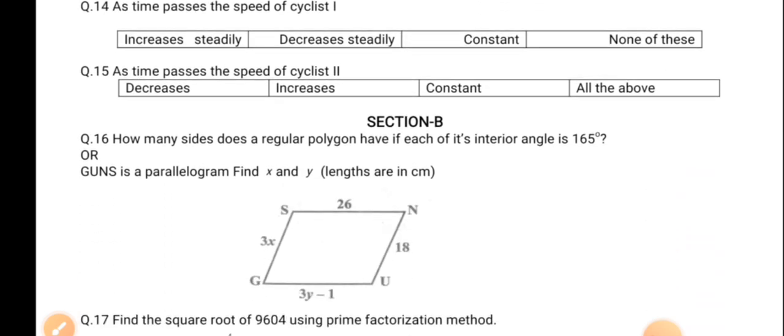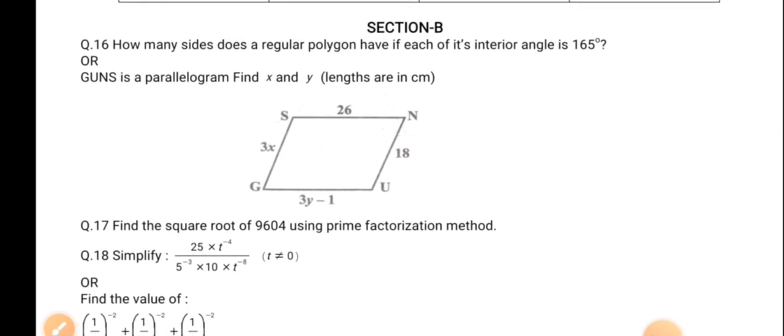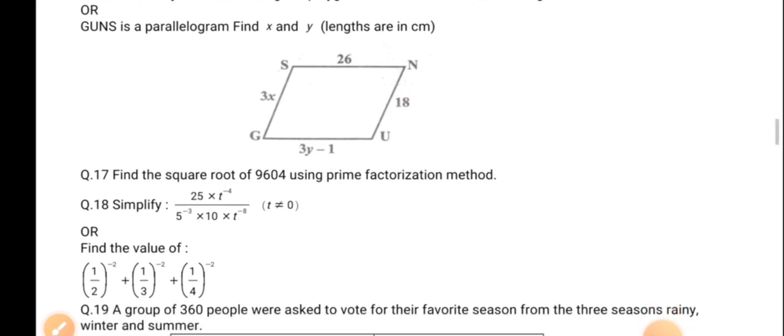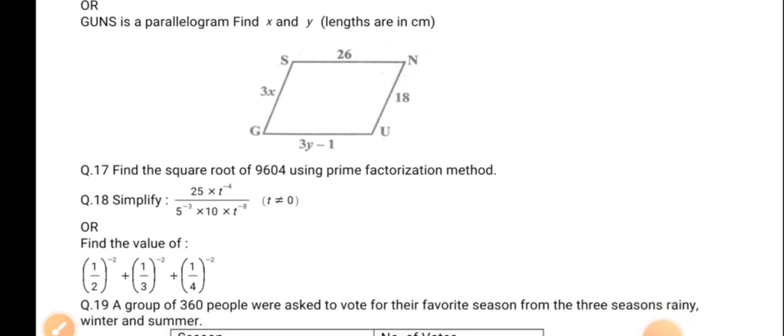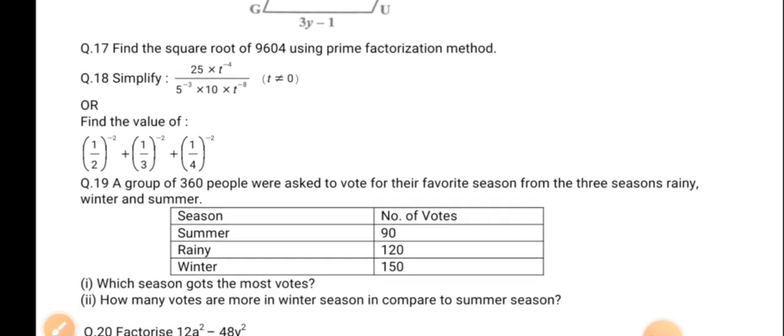Now moving towards the section B. Section B mathematics, you can see there are only 2 marks questions. So 2 to 3 line solution will be there for these questions. Very easy question types I have prepared and all the chapters, all the questions and important questions also I have included in this paper.